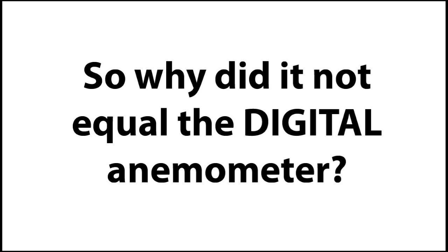This is interesting because the digital readout showed the anemometer traveling at 5 miles per hour. So why is our calculation not matching? Well, it is pretty accurate when you think about it — it's just a bunch of Dixie cups on a straw. The digital reading is much more accurate, and there were some counting issues on my part. So that's the difference.